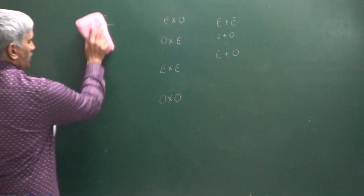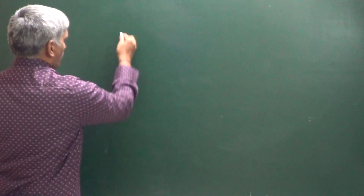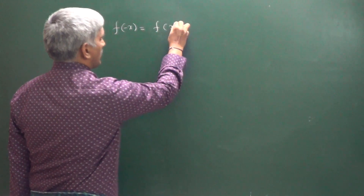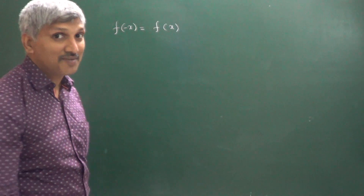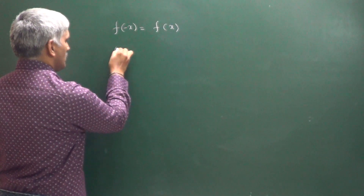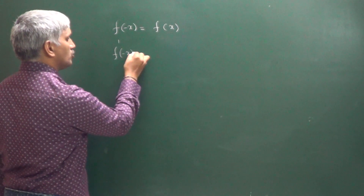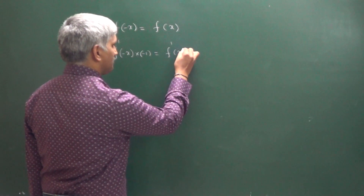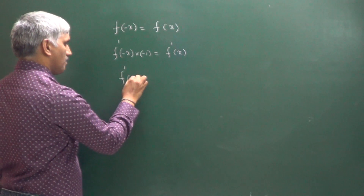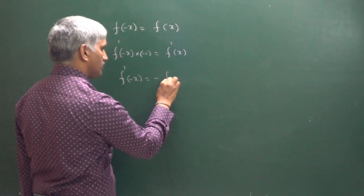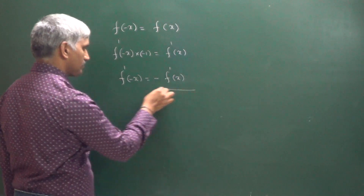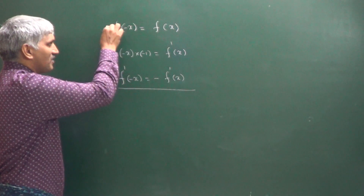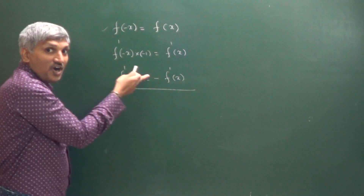Next, consider the differentiation. If f of minus x equals f of x — that is, f is an even function — differentiate both sides. We get f dash of minus x times minus 1 equals f dash of x, so f dash of minus x equals minus f dash of x. Therefore, if f is an even function, its derivative is an odd function.